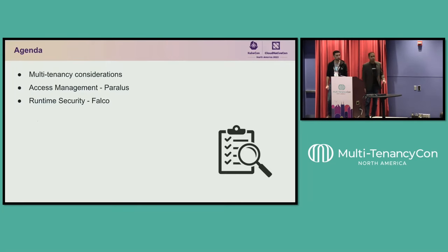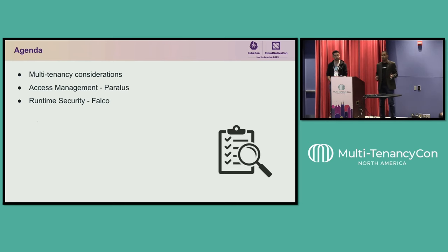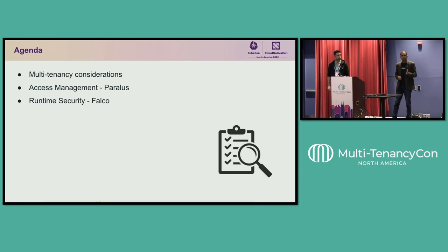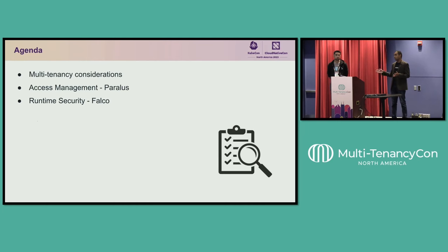So what we'll do today is first set the context in terms of what are the things you need to be thinking about when you're implementing multi-tenant clusters. And then we'll dive deep into two specific areas: controlled access — we'll talk about how Paralus can help — and runtime security. Thomas will be talking about how Falco can help you secure your Kubernetes environments.